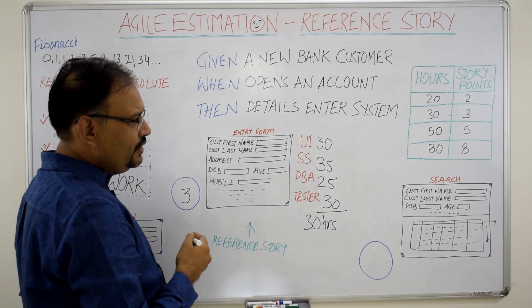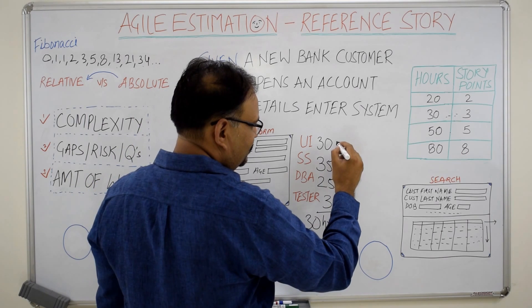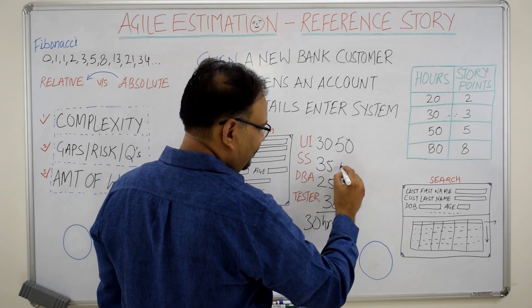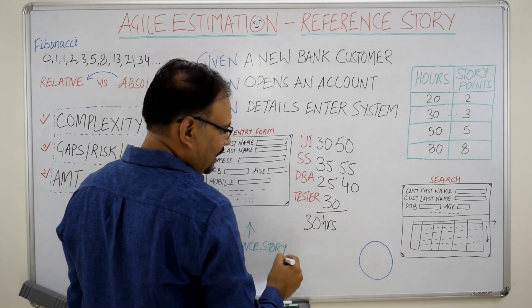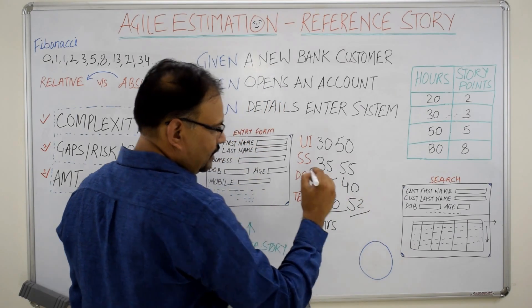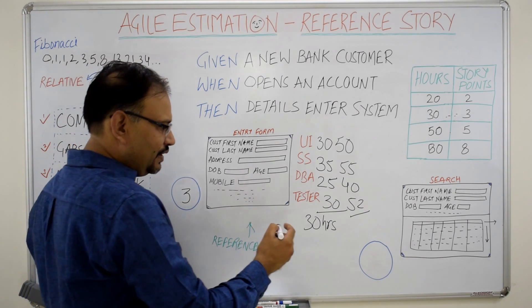Now there may be a case where UI developer says that instead of 30 hours, the end to end estimate of the story is going to be 50 hours. Server side saying 55, DB saying 40 and tester saying say 52. The close enough estimate which can be agreed by the team is 50 hours.